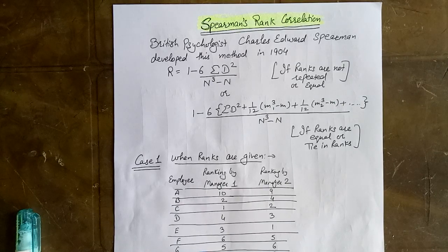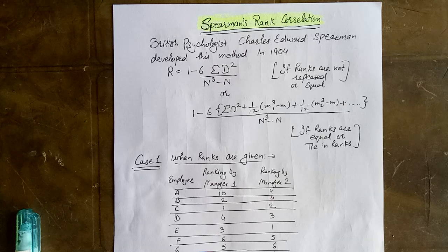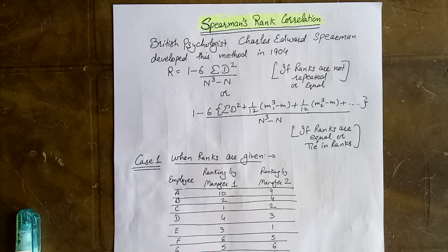Now let us start with Spearman's Rank Correlation. British psychologist Charles Edward Spearman developed this method. The basic formula is R equals 1 minus 6 sigma D-squared over N-cubed minus N. You can also write it as N(N-squared minus 1) in the denominator. This formula applies when there is no equality or tie in the ranks.